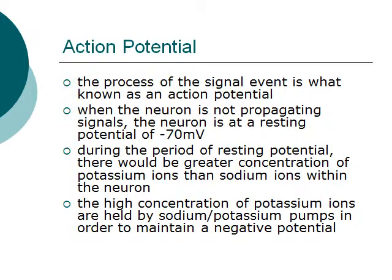The general function of neurons is to send signals from one part of the body to another, using something called an action potential. When the neuron is not propagating signals, it is usually at a resting potential of minus 70 millivolts. During resting potential, there is a greater concentration of potassium ions than sodium ions within the neuron.